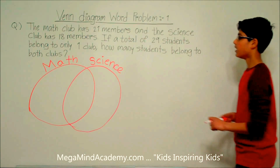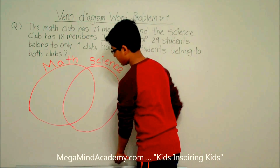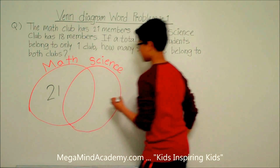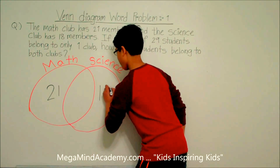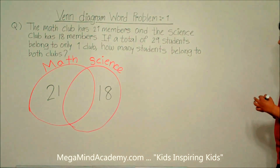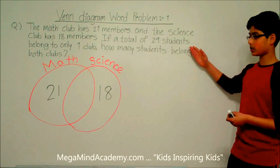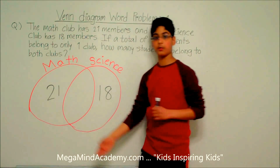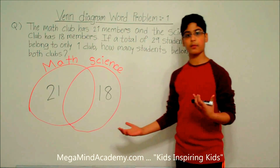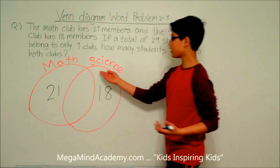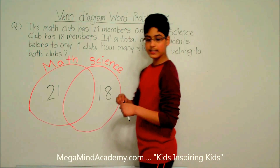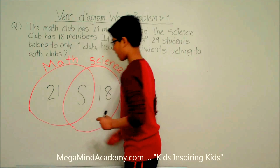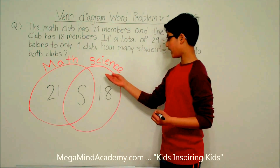We know that the math club has 21 members and the science club has 18 members, so let's write that in the circles. It also says in the problem that a total of 29 students belong to only one club. That means there are some number of students who belong to both the math and the science clubs. Let's label that number of students as S.